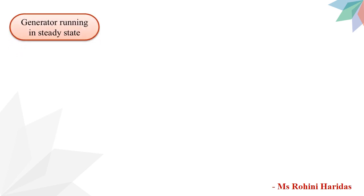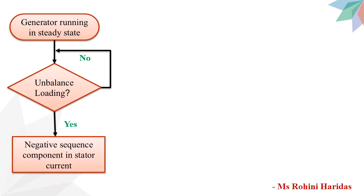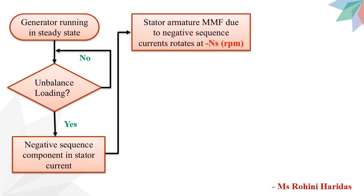Now let us see how unbalanced loading of the stator causes the rotor to overheat. Let us assume that the generator is running in a steady state condition. If there is an unbalanced loading of the generator, then the stator current will have a negative sequence component. This negative sequence component produces a rotating magnetic field which rotates at synchronous speed but in the opposite direction to the rotor speed.